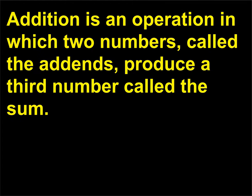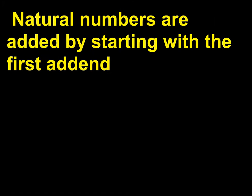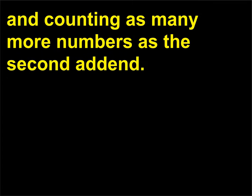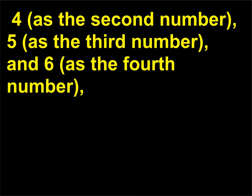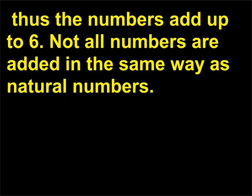What is addition? Addition is an operation in which two numbers, called the addends, produce a third number called the sum. Natural numbers are added by starting with the first addend and counting as many more numbers as the second addend. For example, for 2+4, you would think 2, 3 (as the first number after 2), 4 (as the second number), 5 (as the third number), and 6 (as the fourth number). Thus the numbers add up to 6.